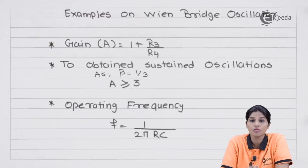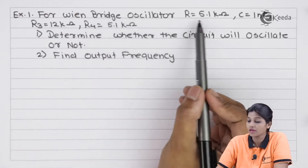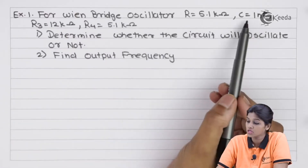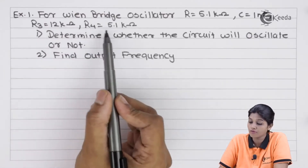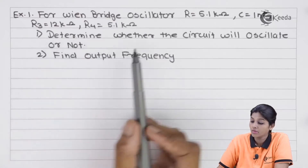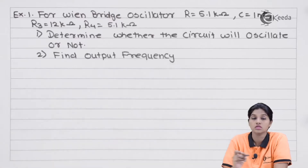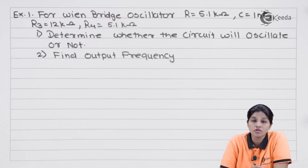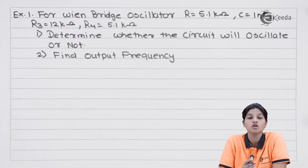Now let's look at the first problem on Wien bridge oscillator design. Given: R = 5.1 kΩ, C = 1 nF, R3 = 12 kΩ, R4 = 5.1 kΩ. Determine whether the circuit will oscillate, and find the output frequency. The values of resistors and capacitors are given, so we first determine whether the circuit can oscillate, then find the operating frequency.